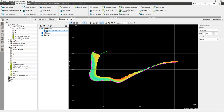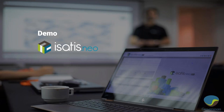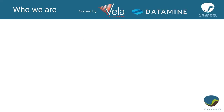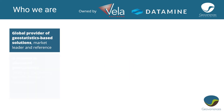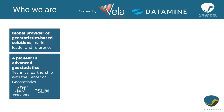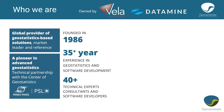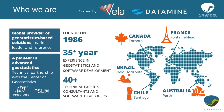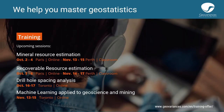That's the end of the demo. If you have questions, now would be a good time to ask them in the questions section. While you're thinking of questions, I'll talk a little about Geovariance: we're owned by Avella Software, part of the Datamine group — a global provider of geostatistics-based solutions, pioneer in advanced geostats. The intellectual driving force of the company for decades has been a technical partnership with the Centre for Geostatistics at the School of Mines in Paris. Founded in 1986, we have several decades of experience and 40-plus technical experts, consultants, and developers across various offices worldwide.